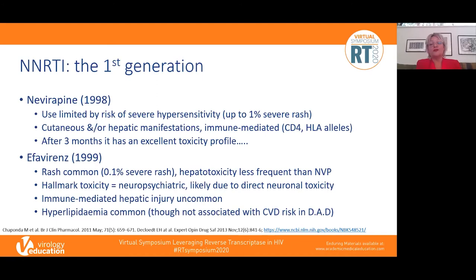Moving on to NNRTIs: the first-generation NNRTIs were licensed in the late 1990s. Nevirapine was a good drug once stable on it; after three months it has a very good toxicity profile, but its use is limited by severe hypersensitivity — up to 1% of people develop a severe rash — and hepatic hypersensitivity, which can be fatal. This is immune-mediated, related to CD4 count, with higher risk at higher CD4 counts and some HLA associations, though those studies tend to be small with weak associations.